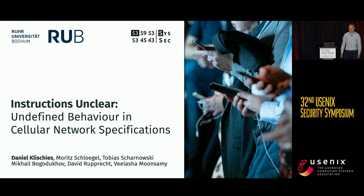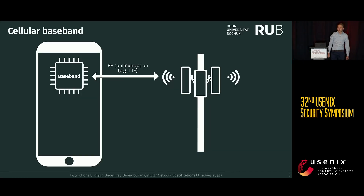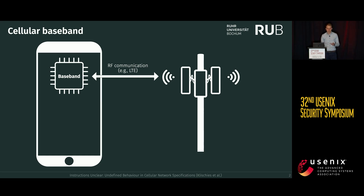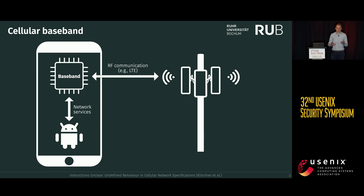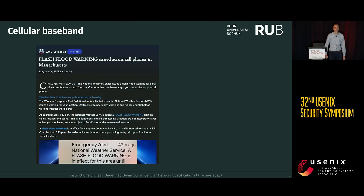Welcome to my talk on undefined behavior in cellular network specifications. I want to start by telling you the story of a vulnerability we found in the firmware of MediaTek smartphone basebands. A baseband is the component inside your phone that connects to the LTE network and to the main application processor to provide network services — for instance, to enable calls or data connections. The vulnerability we found is in the public warning system, also known in the U.S. as wireless emergency alerts or cell broadcast, which is used by governments to alert citizens of natural disasters.